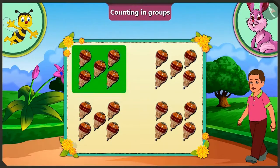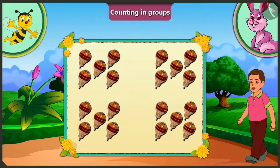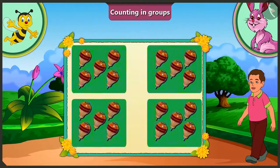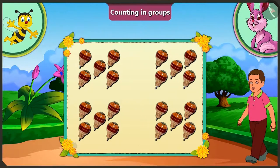If we know the total number of items in one group, then we can find out the total number of items in different groups. Yes, I have understood it very well.